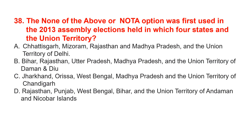The NOTA (None of the Above) option was first used in the 2013 assembly elections held in which four states and union territory? It was first used in Chhattisgarh, Mizoram, Rajasthan, Madhya Pradesh, and the union territory of Delhi in 2013. The correct option is option A.